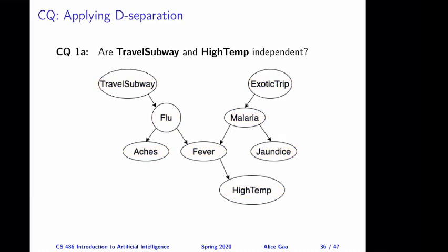Here's question 1a. We are interested in the relationship between travel_subway and high temperature. Let's assume that we observe nothing. So given that we observe nothing, are travel_subway and high temperature independent? Think about this yourself and then keep watching for the answer. The correct answer is no — travel_subway and high temperature are not independent.